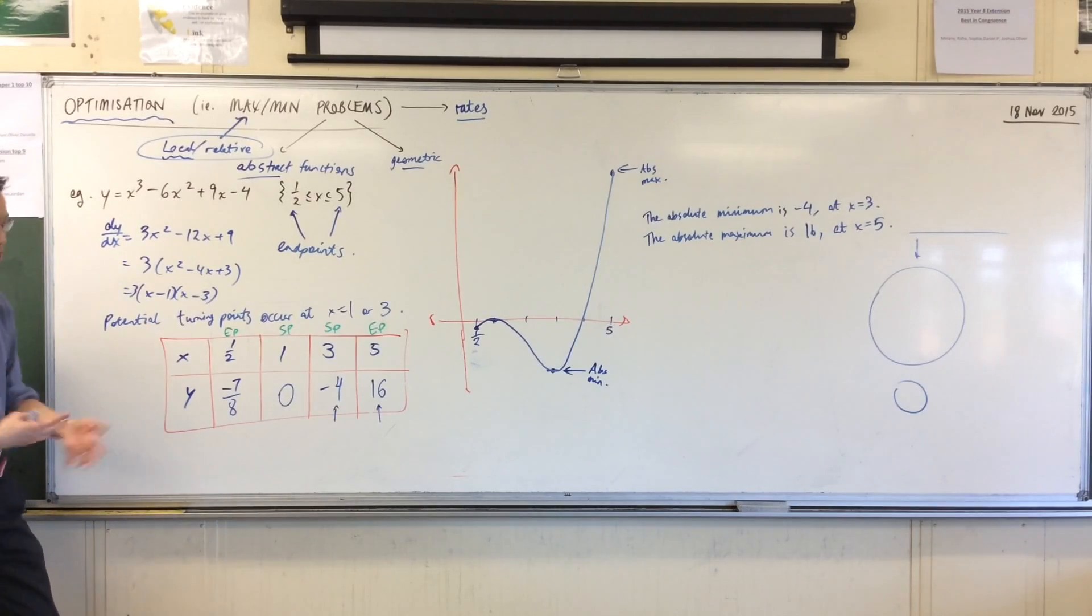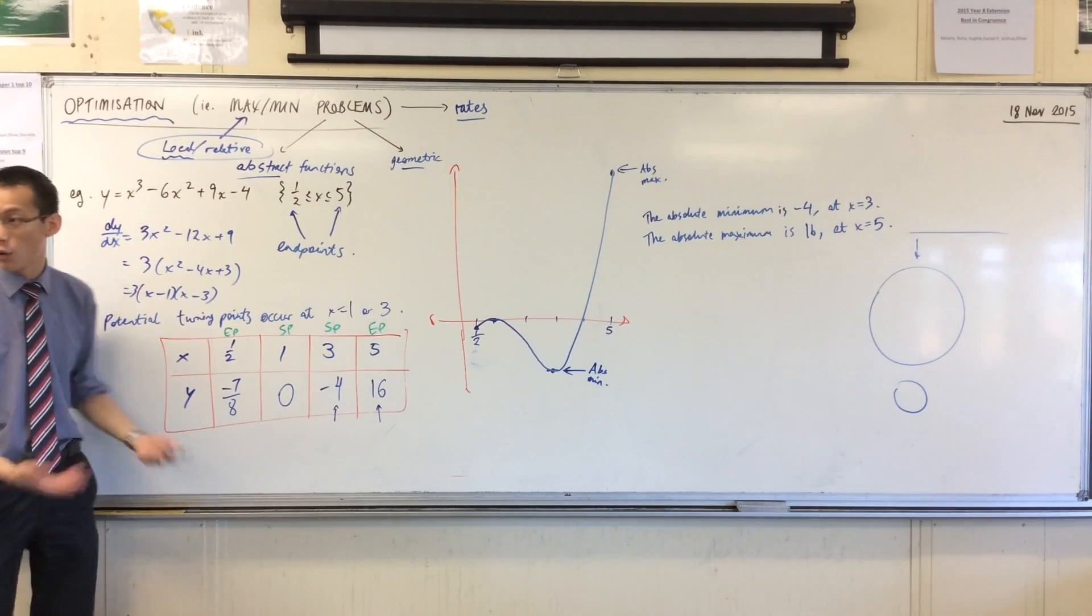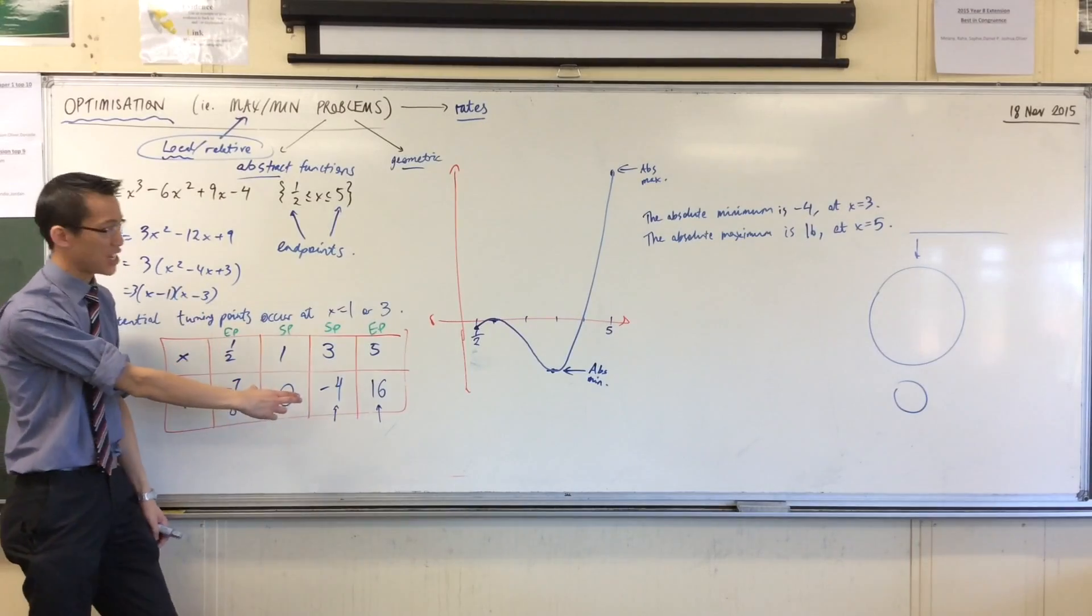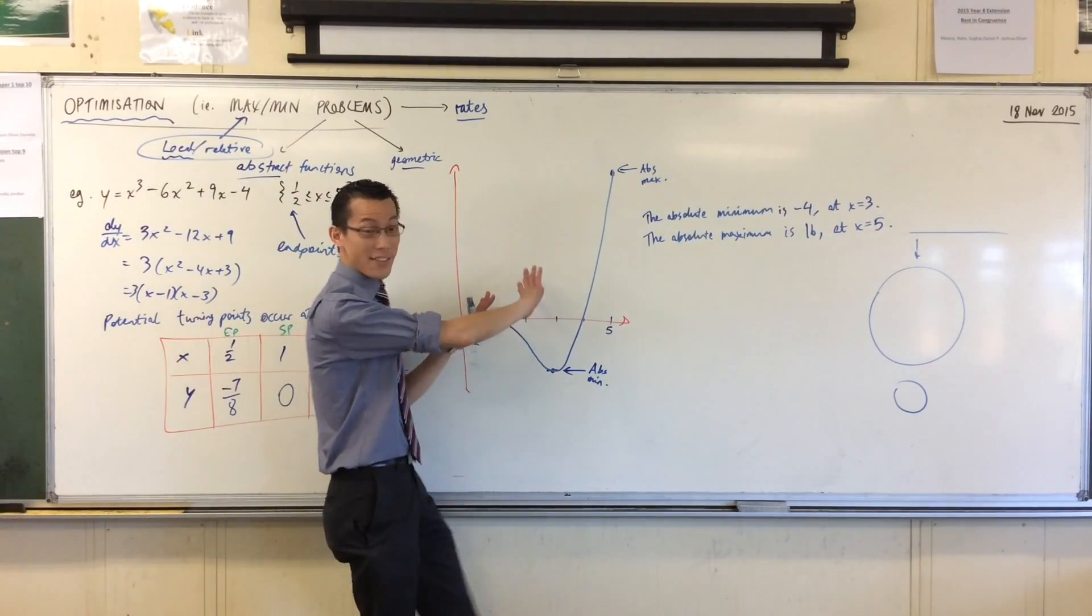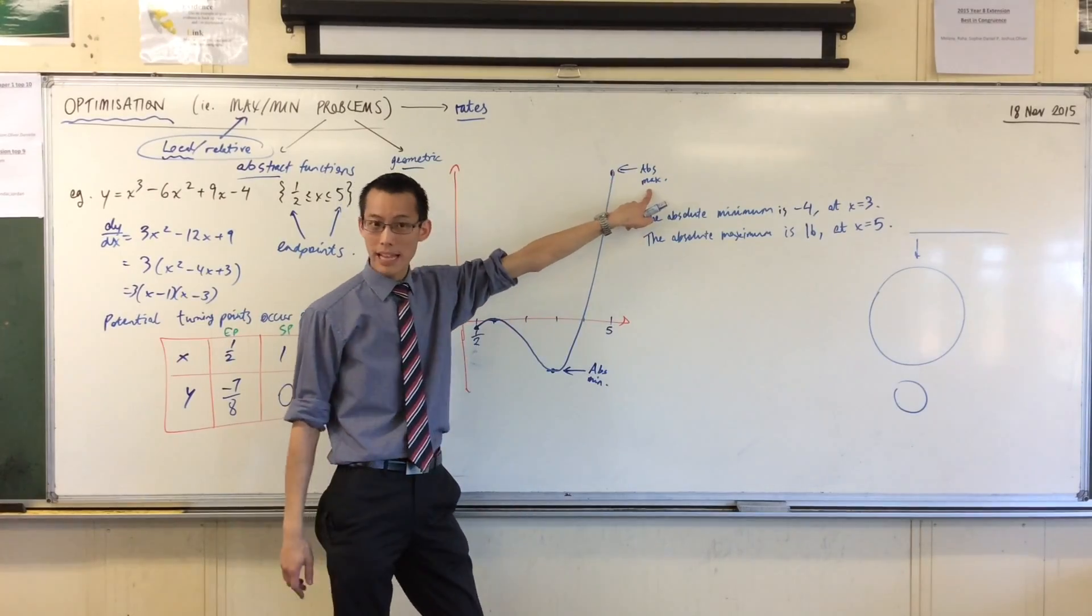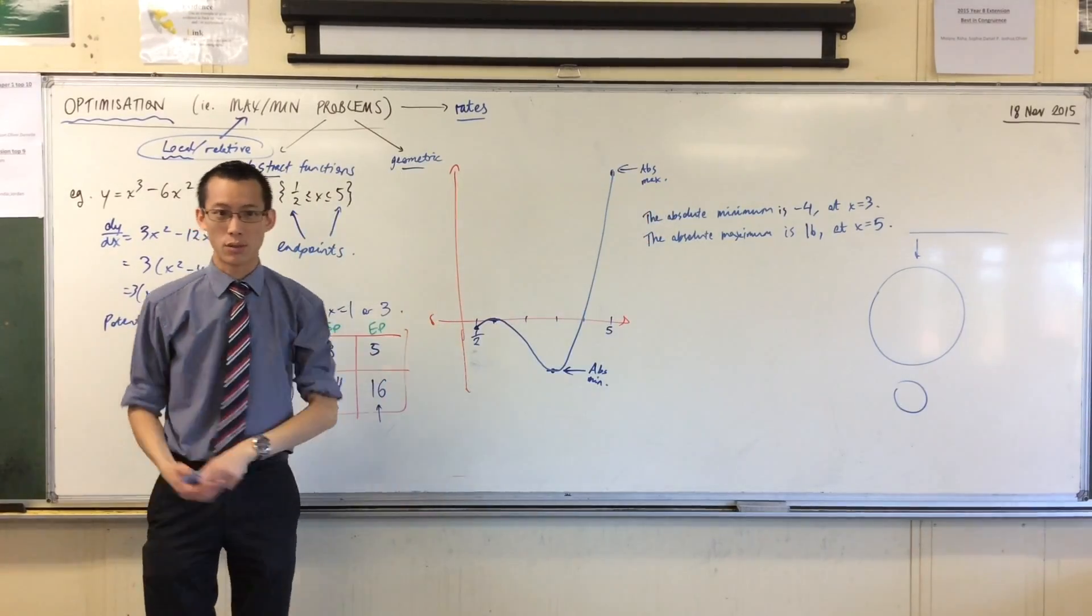And now we have a picture you can see the folly of ignoring endpoints. Why do I have to test the endpoints and all you've got is the stationary points, right? You're kind of ignoring lots of significant parts of the function. I can go way higher. That's the real absolute maximum not the relative one.